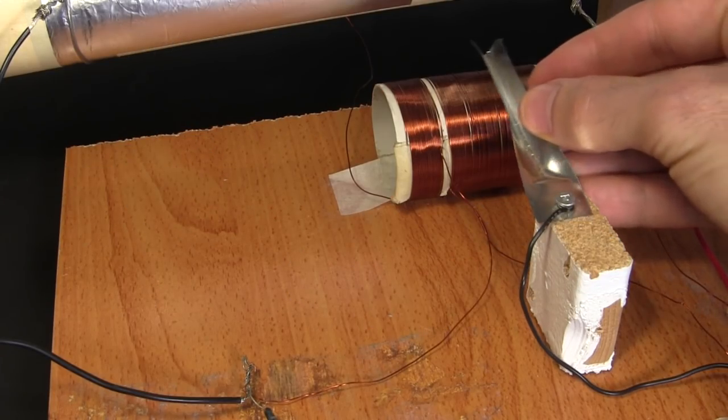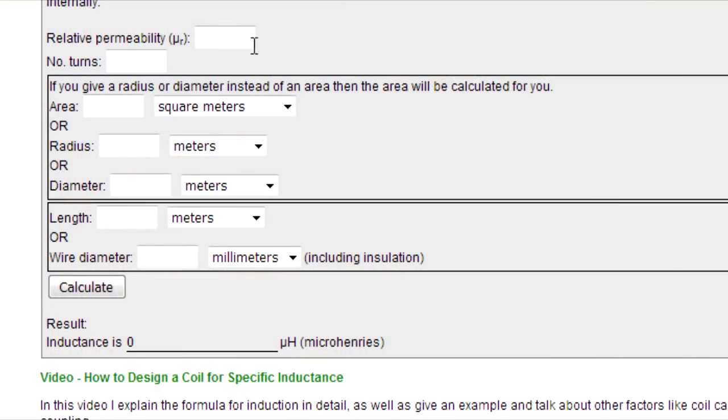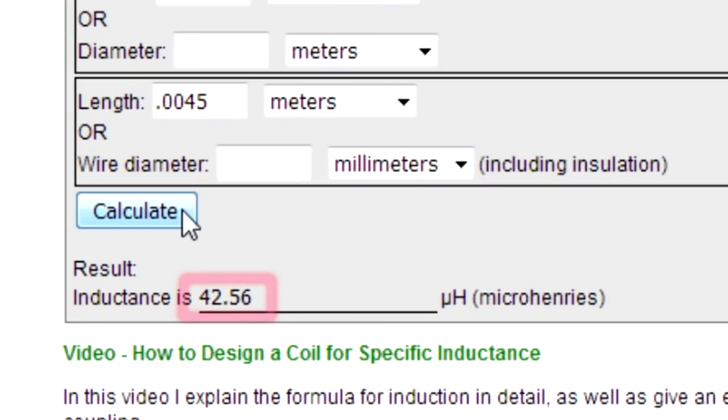Next, we move the wiper blade all the way to here where there are just 10 turns in this section. This time, using the induction calculator on the coil design webpage, we put in the values for the coil we're designing but only 10 turns. If we don't know how long the coil will be, then we can put in the wire diameter and it'll figure out the length on its own. The inductance is around 43 microhenries.